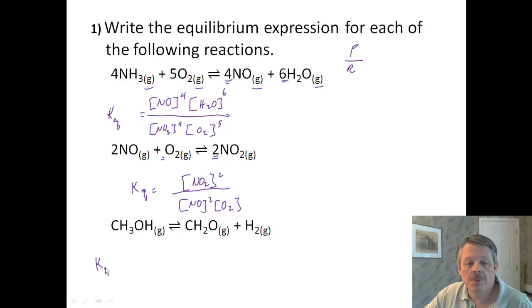And finally, our equilibrium constant for this last one. We have no coefficients, so nothing's going to be squared. Nothing is going to be raised to any power. CH2O is a product. It is a gas. H2 is a product. It is a gas. We are dividing by CH3OH, which is also a gas, and it is a reactant. So that is our equilibrium constant for that expression.